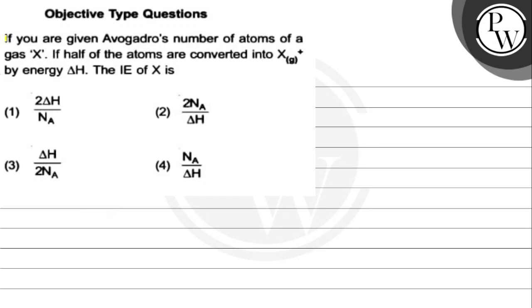Hello, let's see the question. If you are given Avogadro's number of atoms of gas X, if half of the atoms are converted into X gaseous positive by energy delta H, the ionization energy of X is: Option 1 is 2 delta H divided by Na, option 2 is 2 Na divided by delta H, option 3 is delta H divided by 2 Na, and the last one is Na divided by delta H.